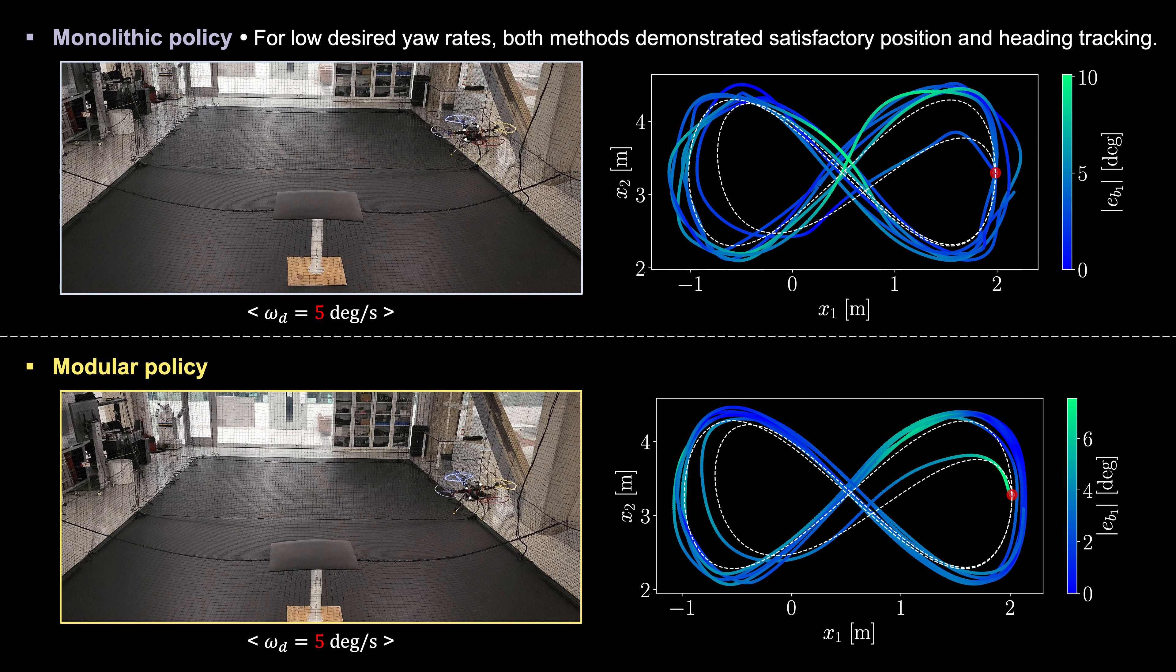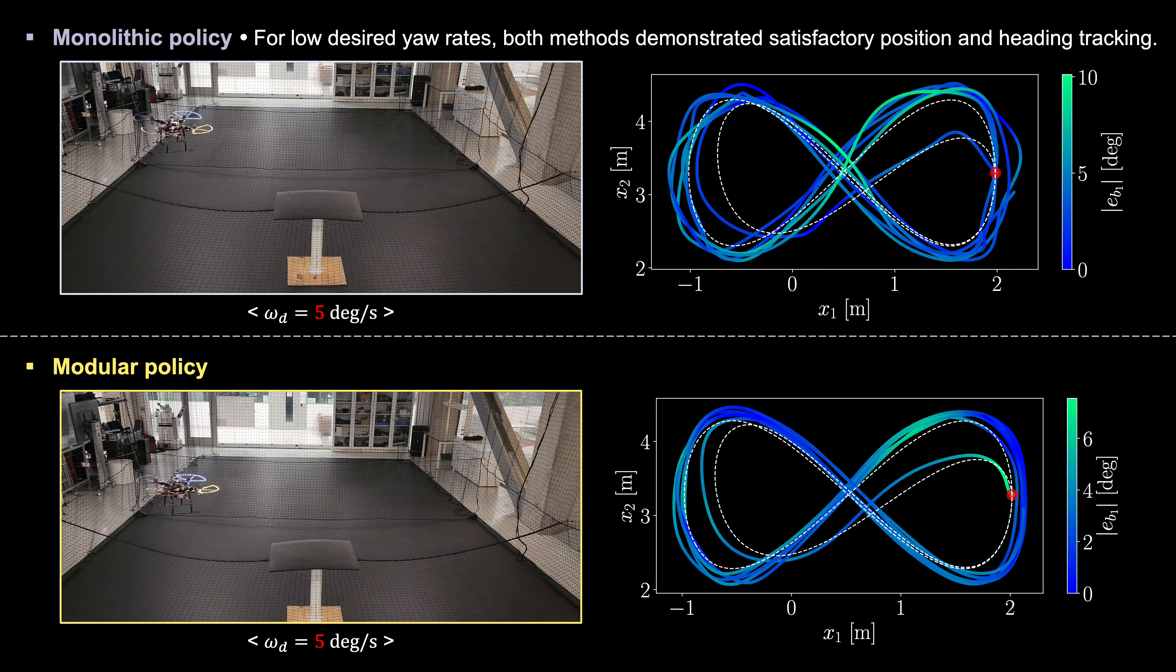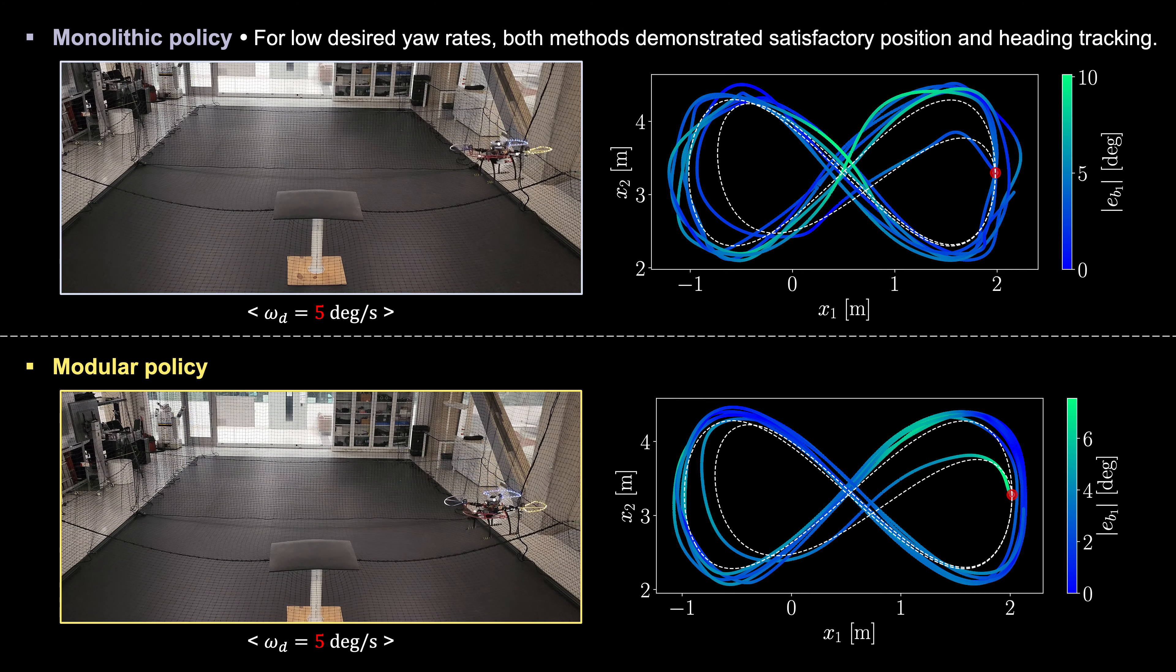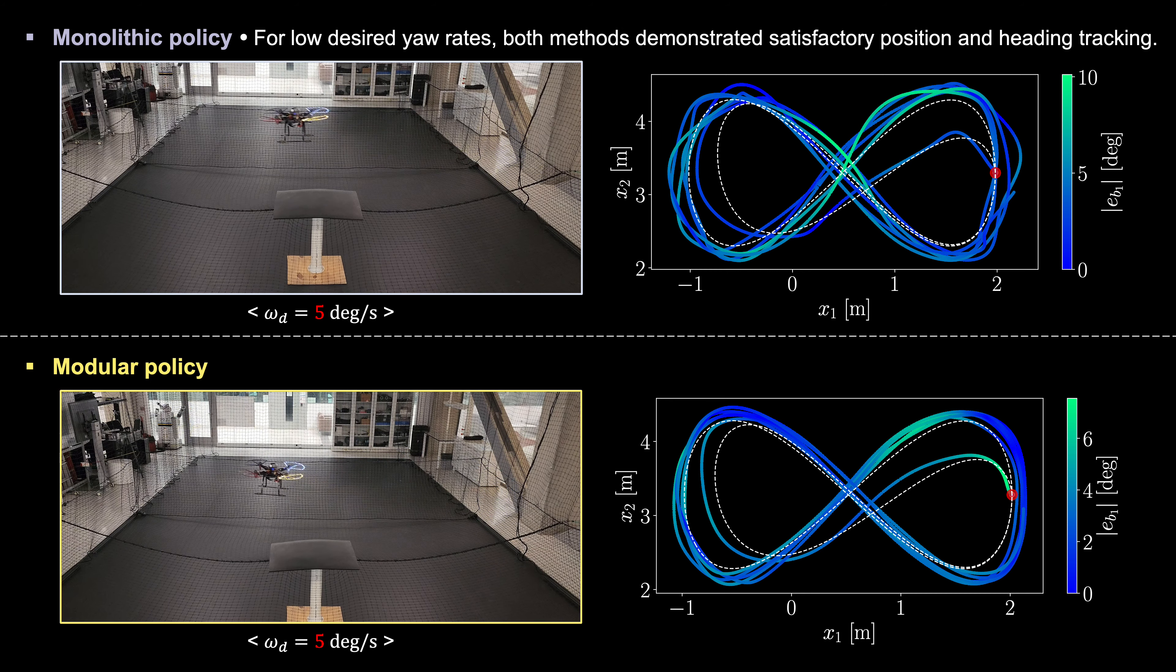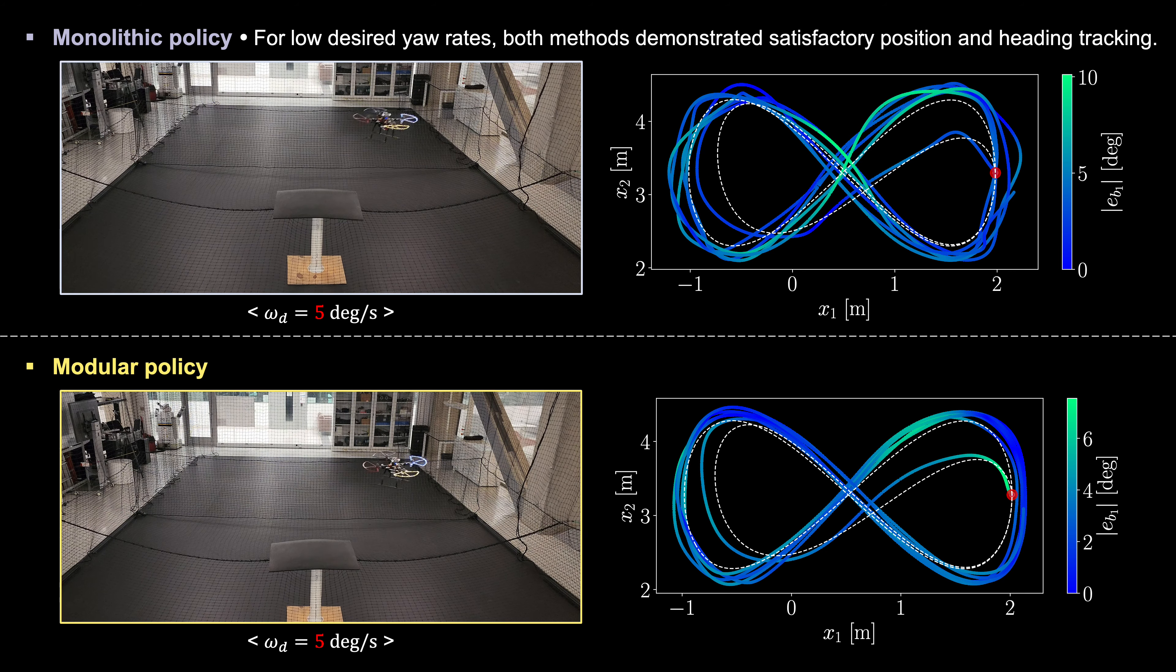Next, we compared monolithic and modular policies at different yaw rates in the real world. In the videos, the quadrotor's heading direction is indicated by yellow lights. For low yaw rates, such as 5 degrees per second...